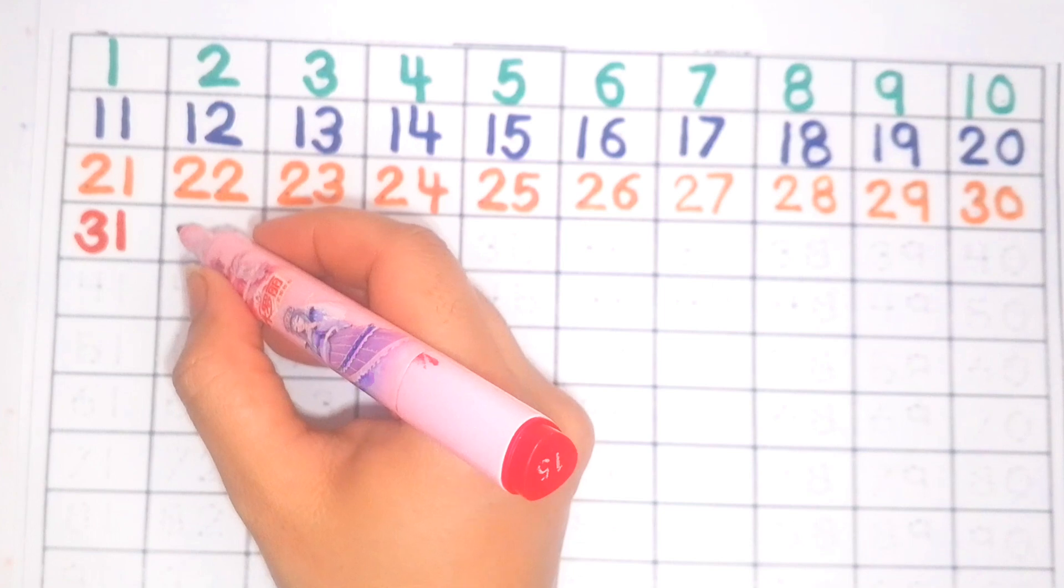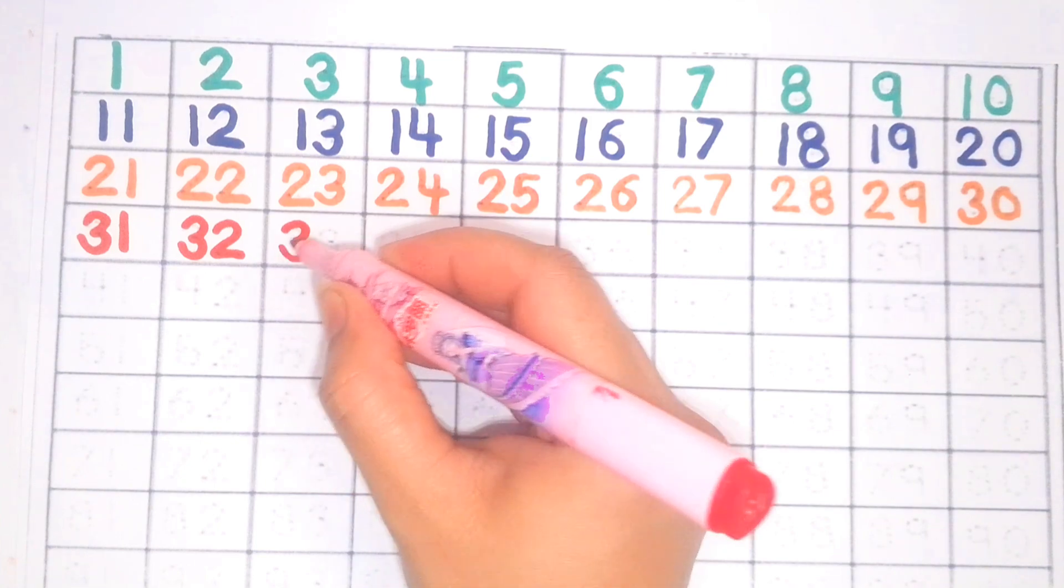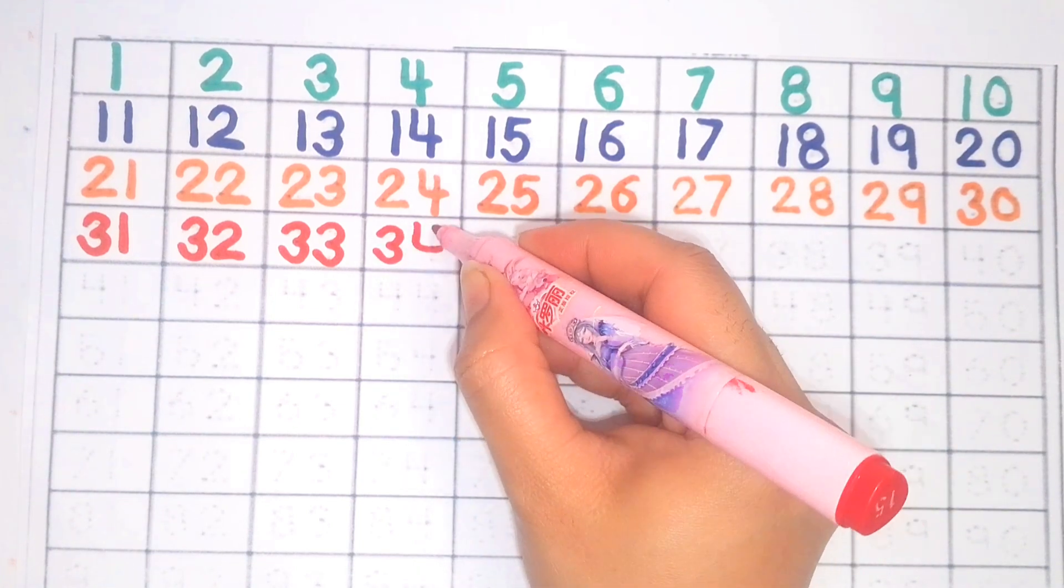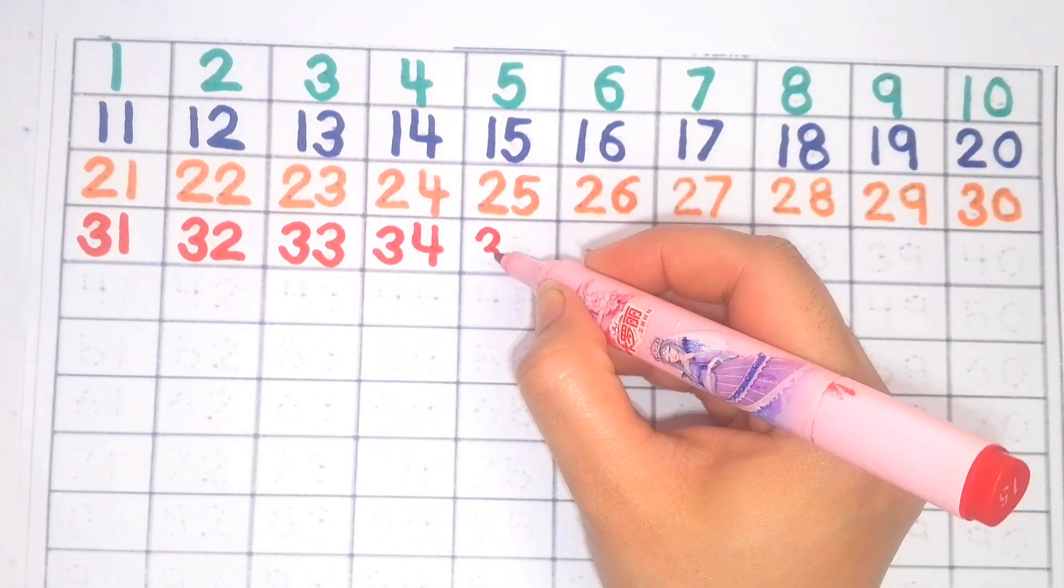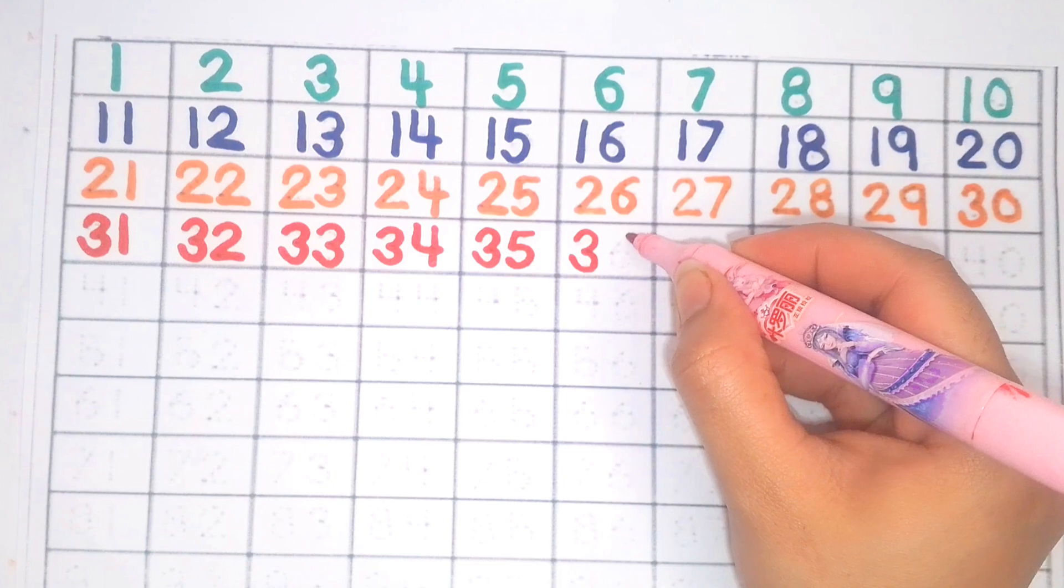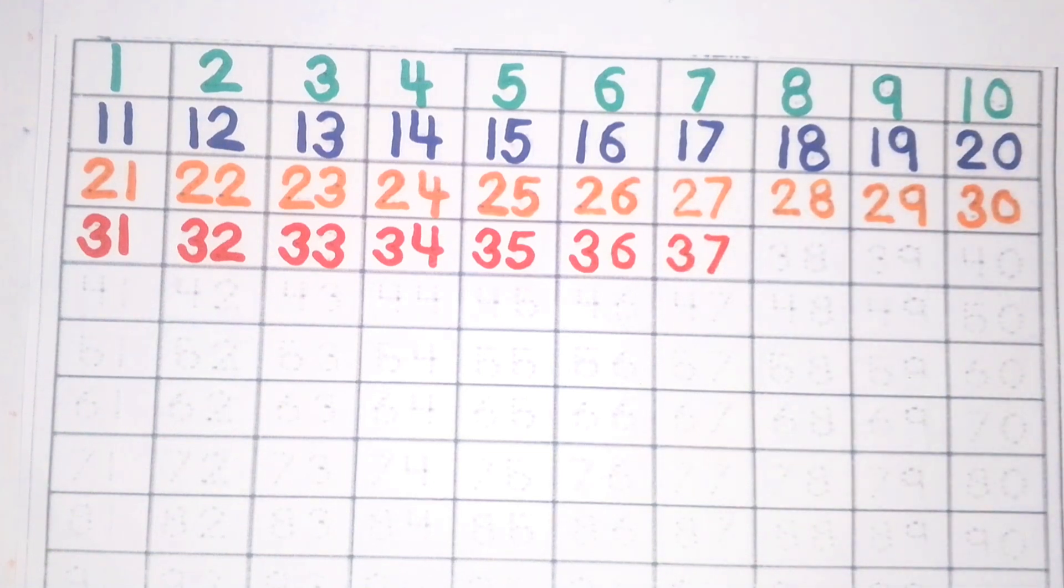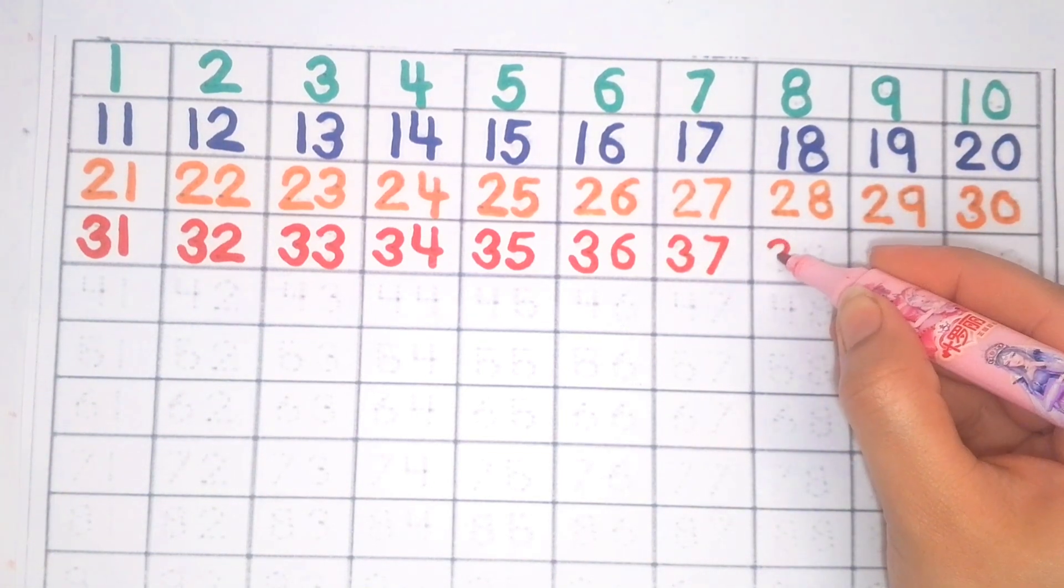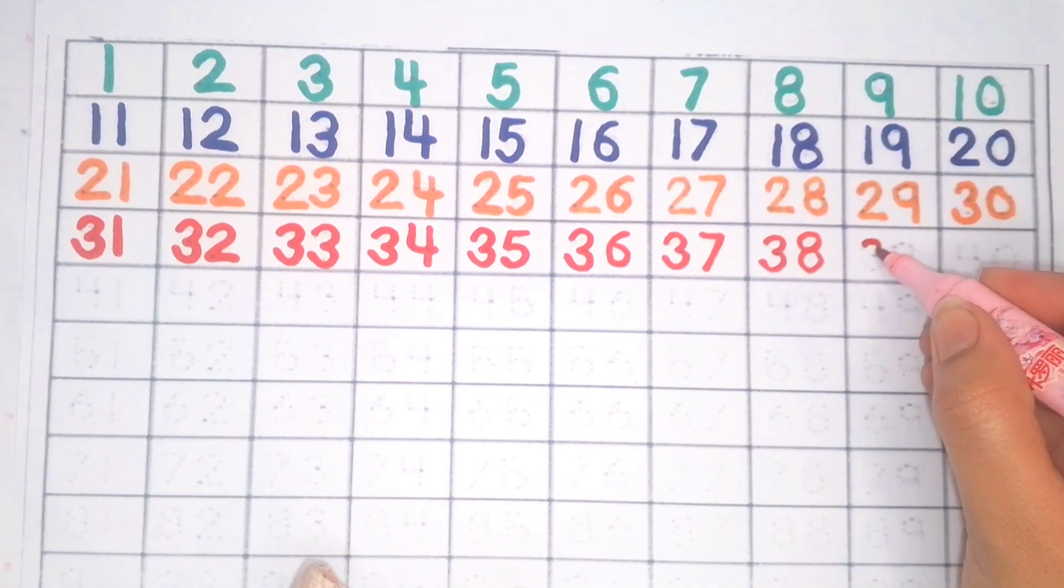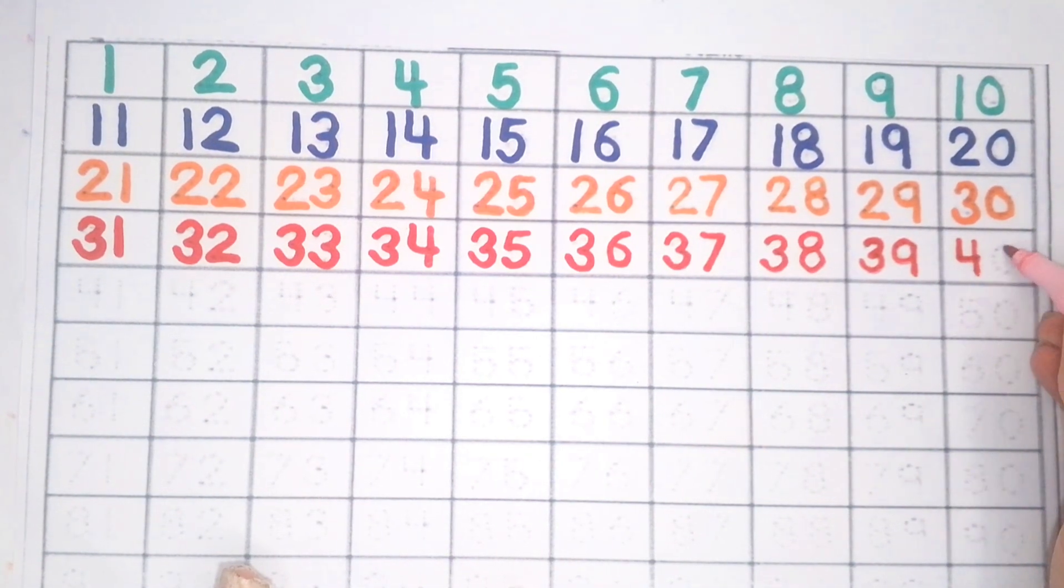Three one thirty-one, three two thirty-two, three three thirty-three, three four thirty-four, three five thirty-five, three six thirty-six, three seven thirty-seven, three eight thirty-eight, three nine thirty-nine, four zero forty.